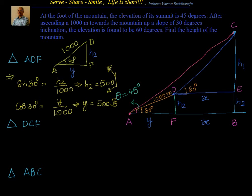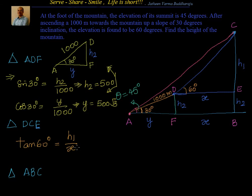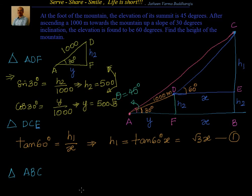Now let us go to triangle DCE. In triangle DCE we have an angle of 60 degrees. Tan 60 equals opposite over adjacent, that is H1 by X. So H1 equals tan 60 times X. Tan 60 is root 3, so H1 equals root 3 times X. This is equation number 1.